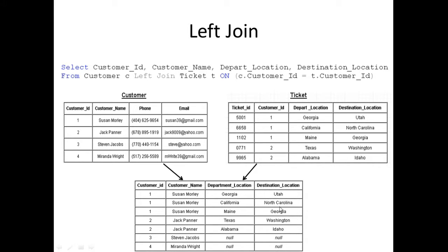The left join returns all records from the left table, so no matter what, all these records are going to be returned — one, two, three, and four. Since we're also looking at depart location and destination location, if there's no match, we simply return null. The reason we're returning null is because there is no match between Stephen Jacobs and Miranda Wright in the ticket table. Customer IDs three and four are not present in that table, and that's why we're getting nulls.